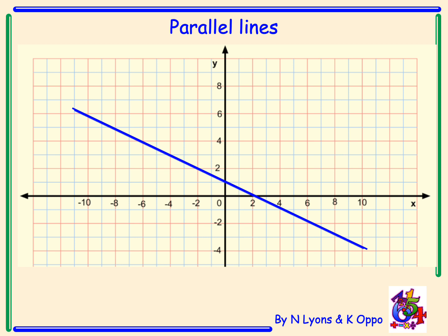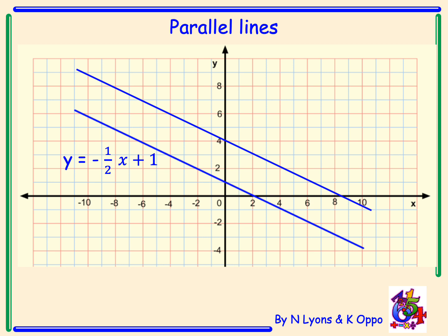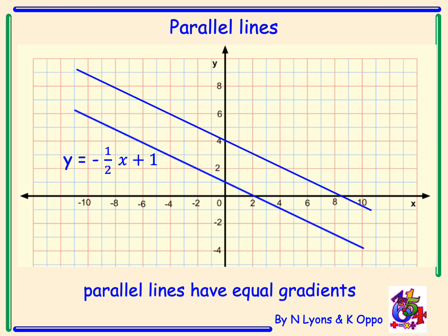Let's recap what we know about parallel lines. Looking at the blue line on the diagram, using y equals mx plus c, the equation of the blue line is y equals minus a half x plus 1. We can draw a line parallel to this. The definition of parallel lines is two lines that never meet — they never intersect, never cross. Parallel lines have equal gradients, so the gradient of this second line is also negative a half. The equation of this second line is y equals negative a half x plus 4.